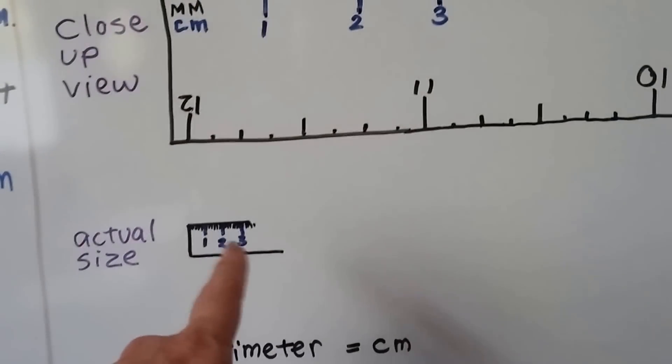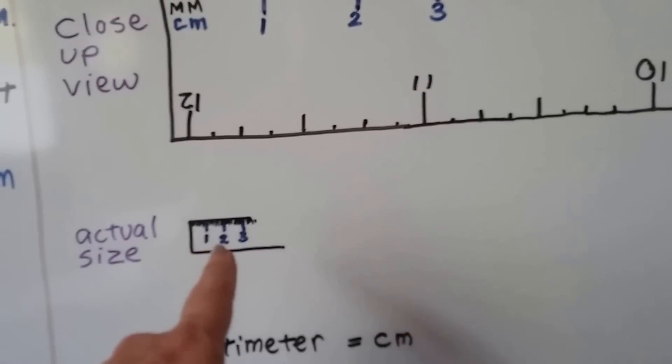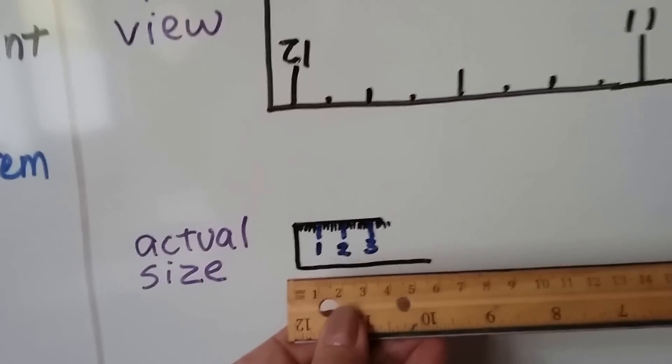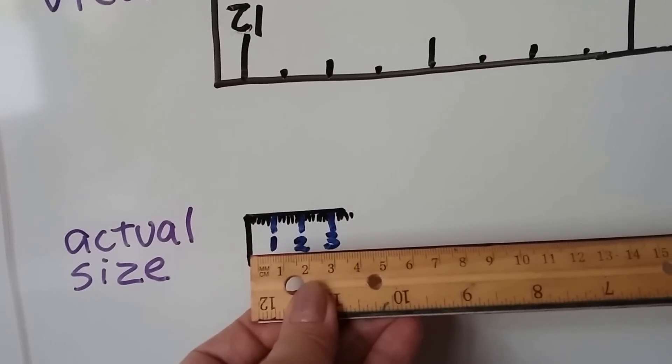The actual size is this size. That's one centimeter, two centimeters, three centimeters. And you can see it lines up here: one, two, three. Those are centimeters.